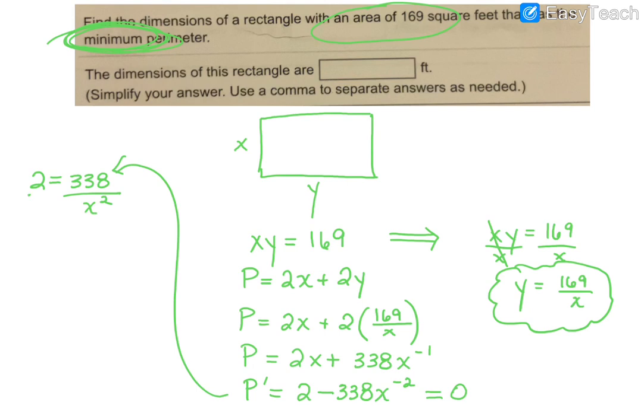And so if I were to take this proportion and multiply both sides by X squared, you can think of it like that, or you can think of it as cross-multiplying. We get 2X squared is equal to 338. So if I divide both sides by 2, then X squared is equal to 169.